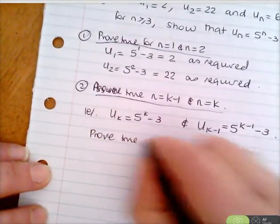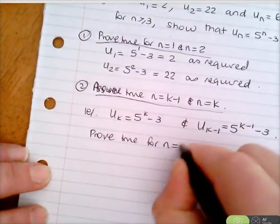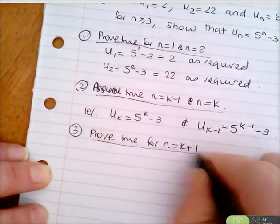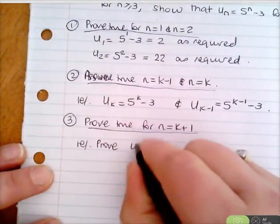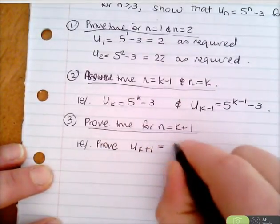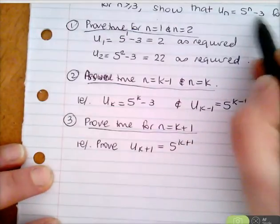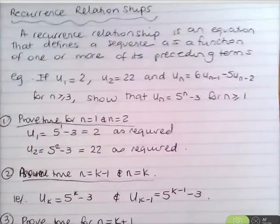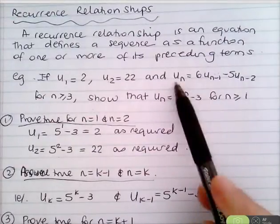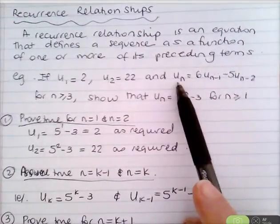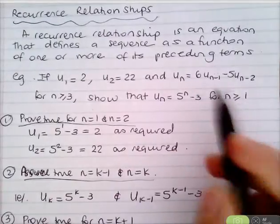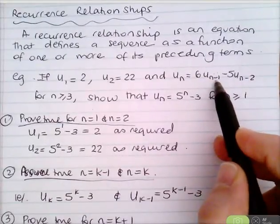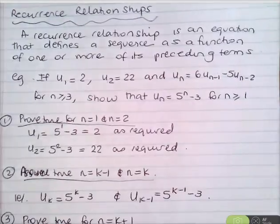In Step 3 we need to prove true for n = k + 1. That is, we need to prove that u_{k+1} = 5^{k+1} − 3. Using the recurrence relation definition, u_{k+1} = 6u_k − 5u_{k−1}.